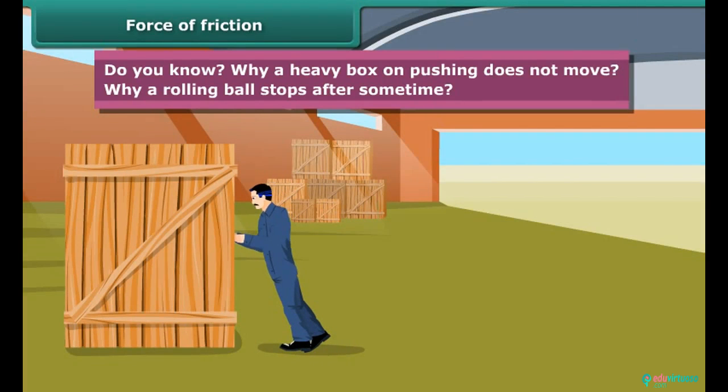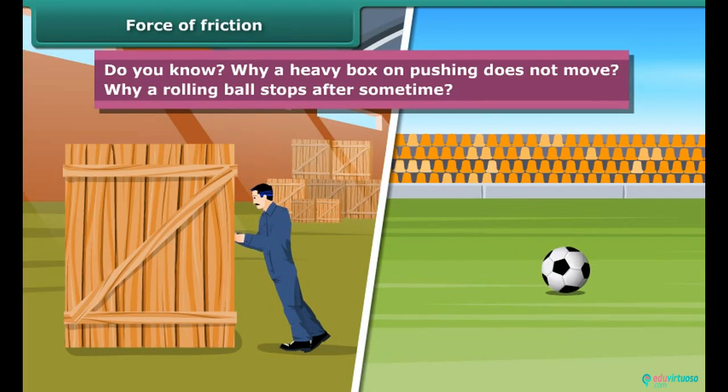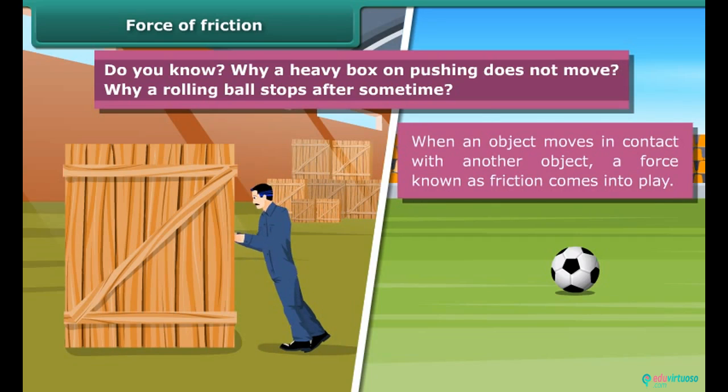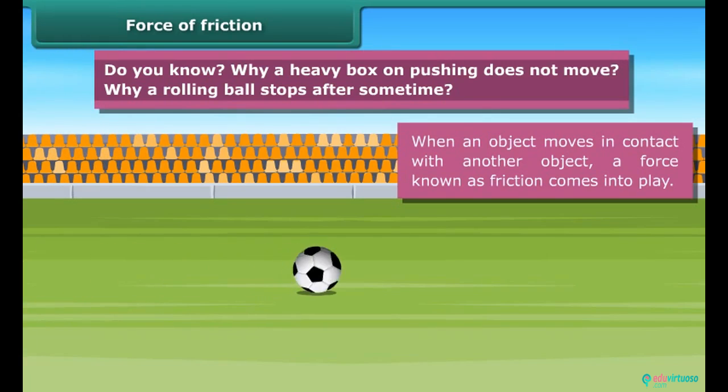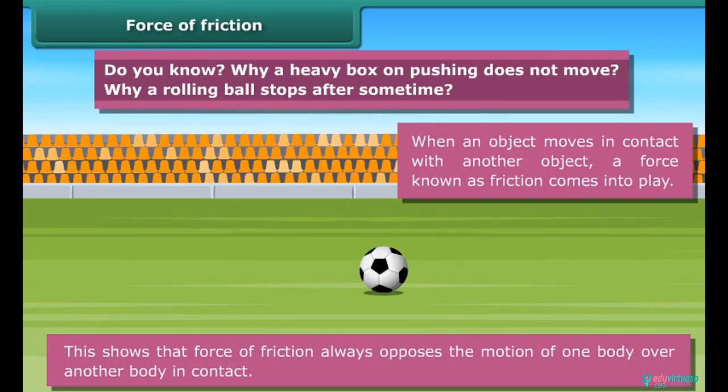Do you know why a heavy box on pushing does not move? Why a rolling ball stops after some time? When an object moves in contact with another object, a force known as friction comes into play. Note that the force of friction always acts on all objects and its direction is always opposite to the direction of motion. The moving object in the animation gradually slows down and ultimately stops due to the force of friction.